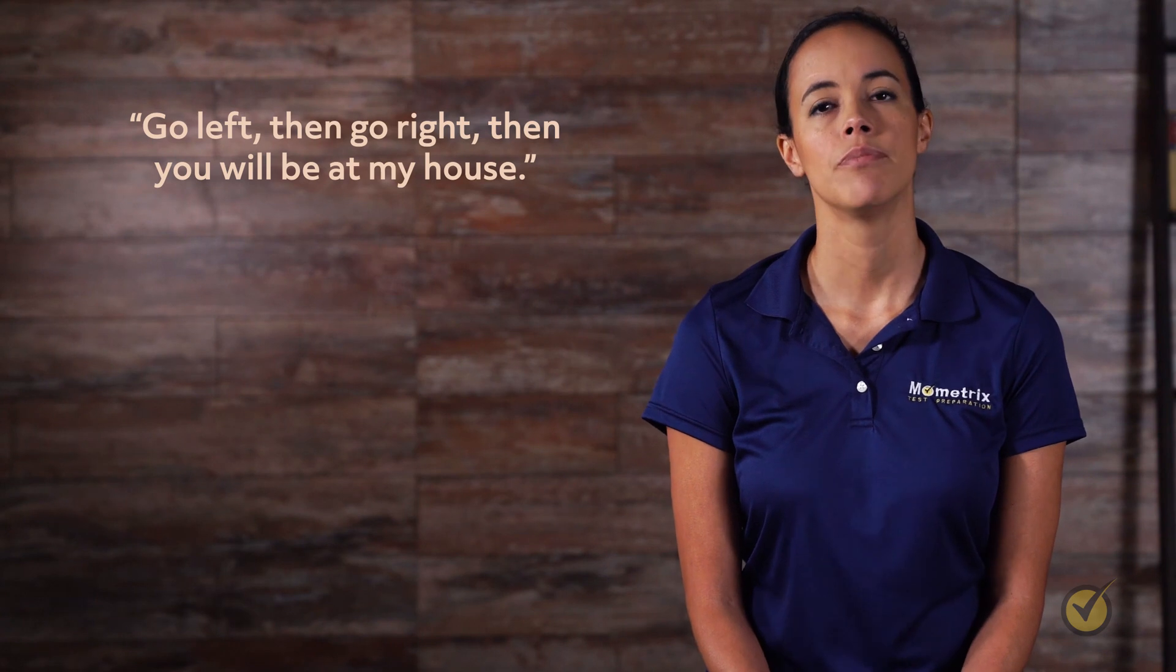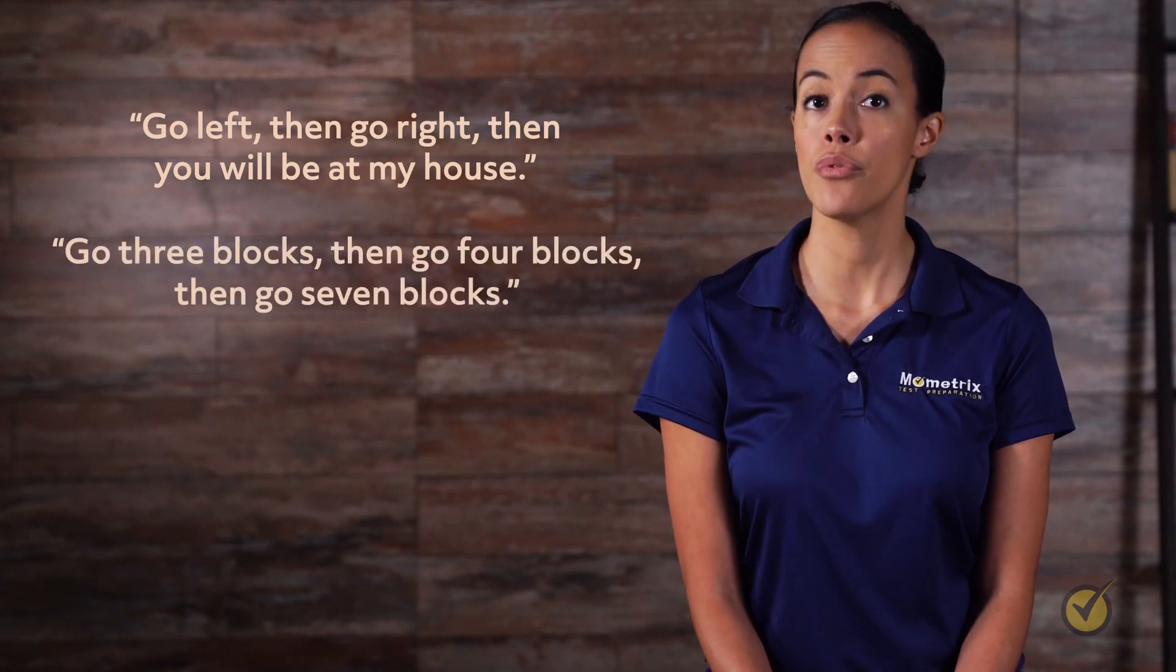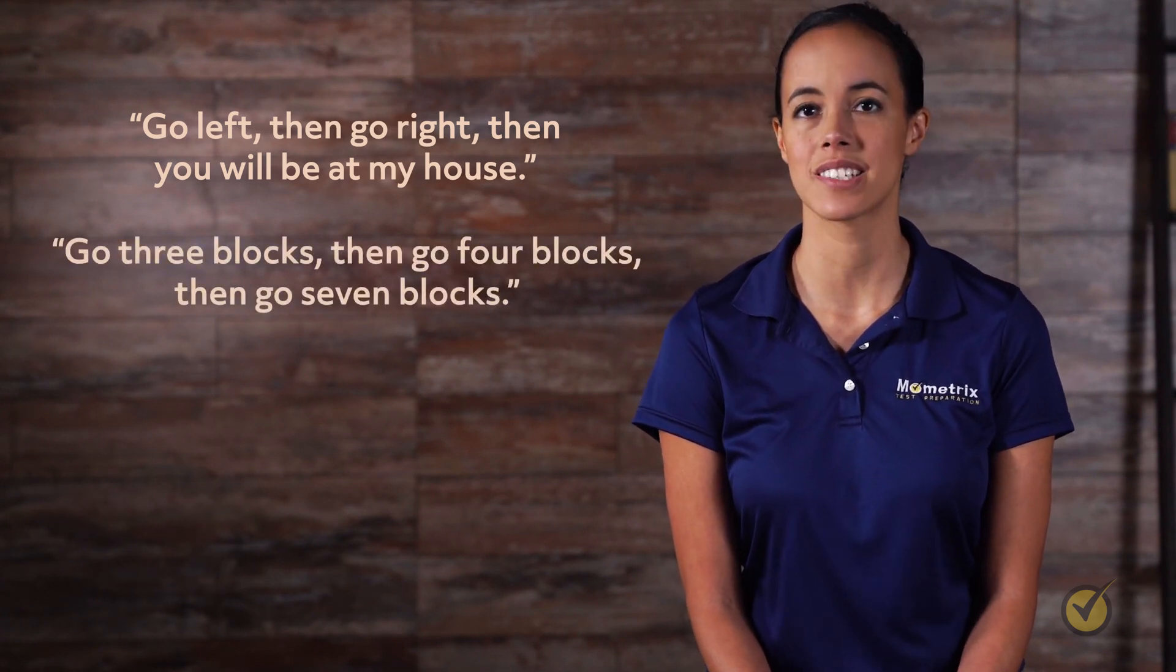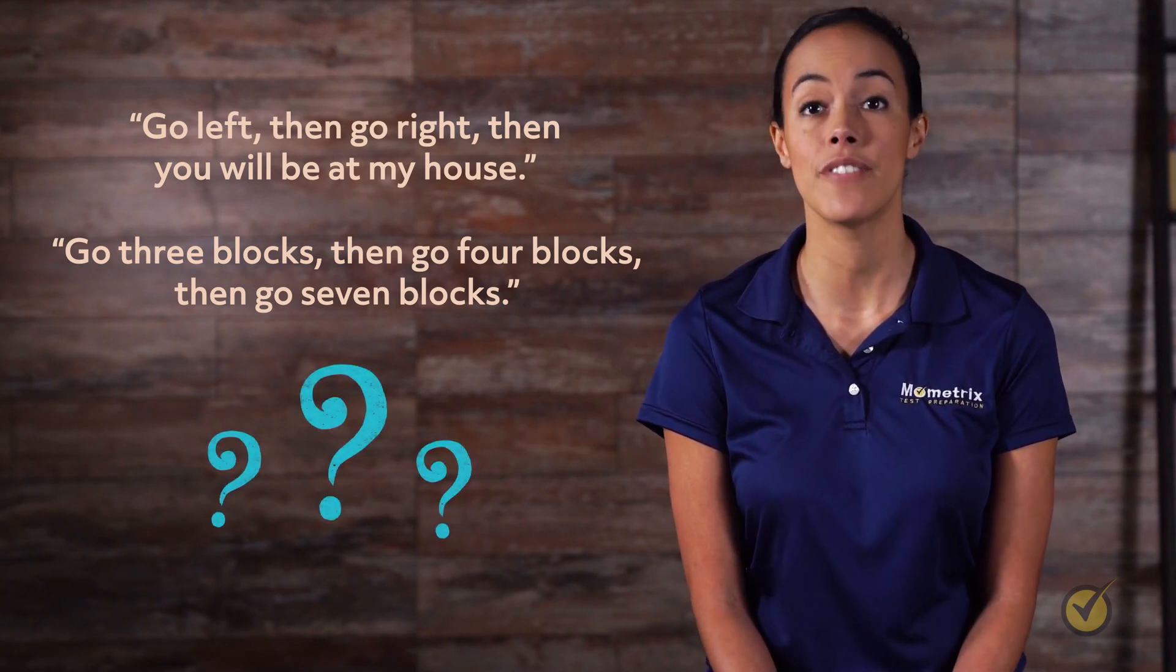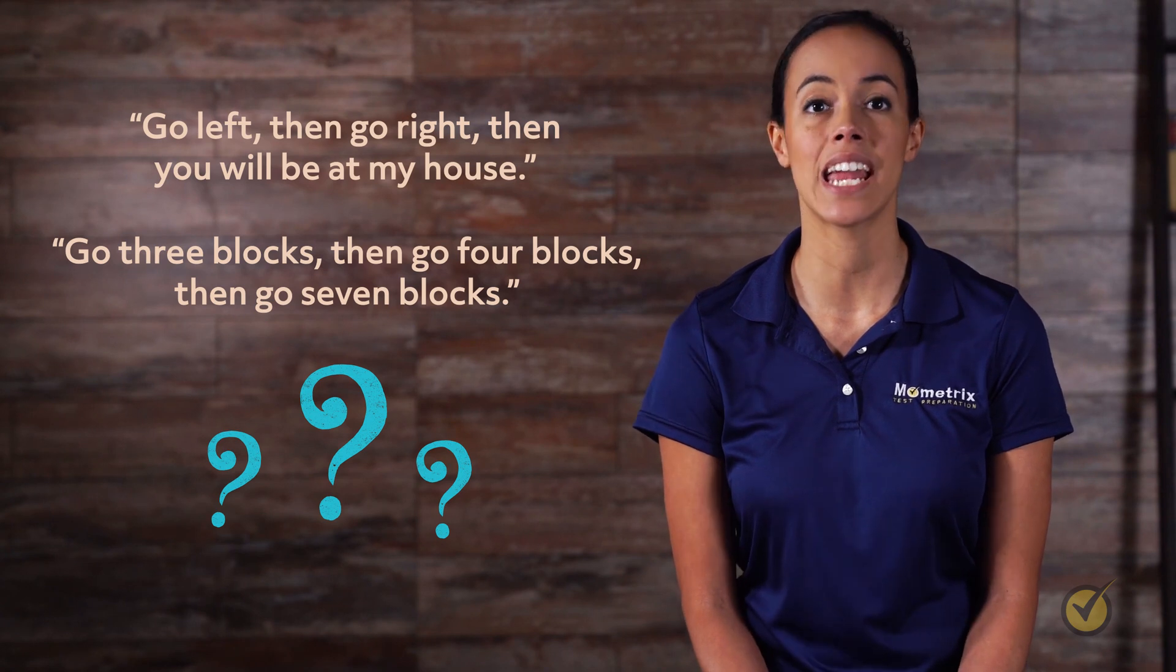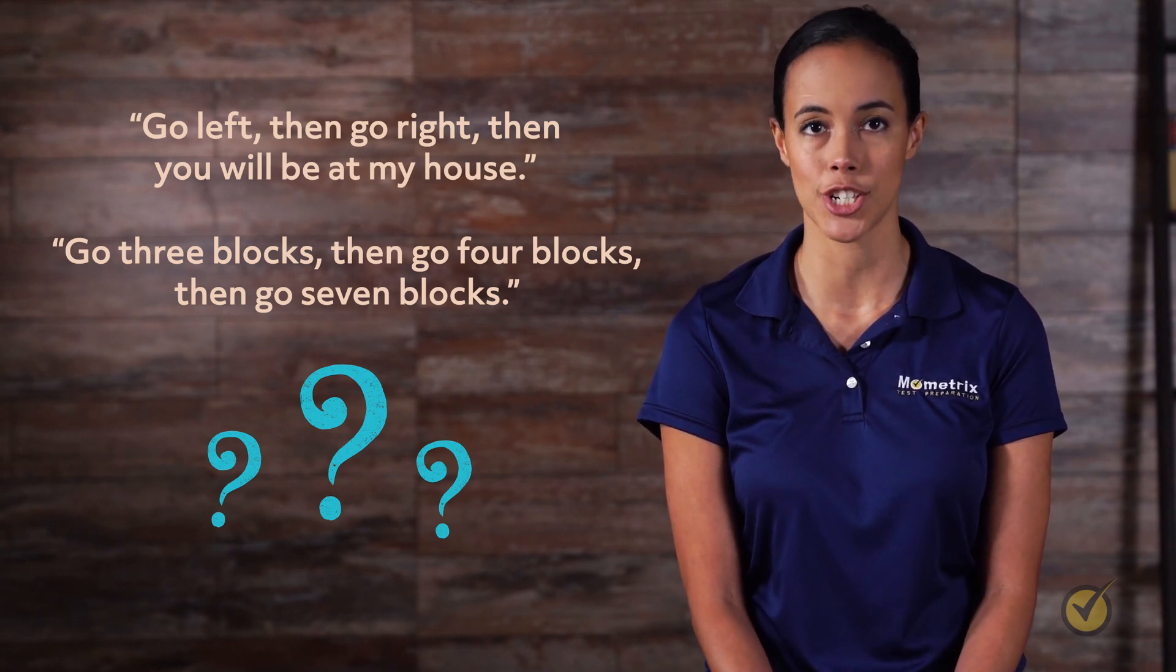But what if your friend said, go three blocks, then go four blocks, then go seven blocks. That's not enough information either. There are no directions to turn. We need vectors: a direction to turn and how long to travel in that direction.